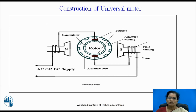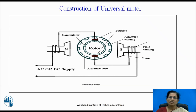Now let us discuss about the construction of universal motor. You can see in this diagram the stator, which consists of the field winding having the field poles N and S. The winding is provided to create the magnetic field in the motor. The second part is the rotor — rotor is nothing but the armature — having the laminated armature core with number of slots. In those slots, the armature winding is provided, and the commutator is given, with the winding connections connected to the commutator.